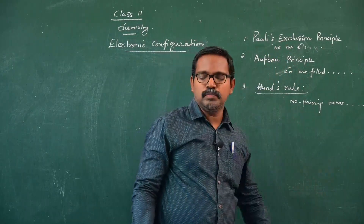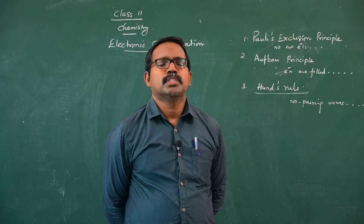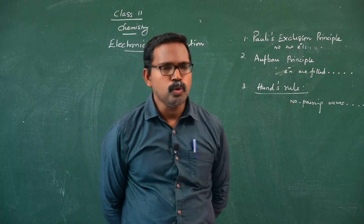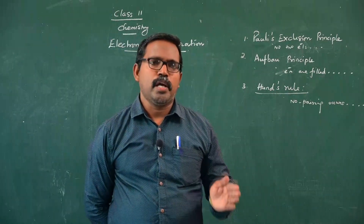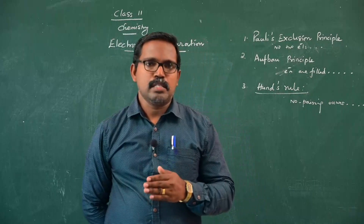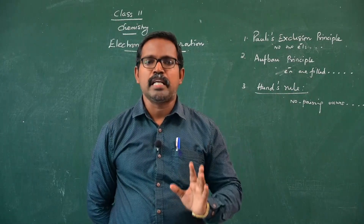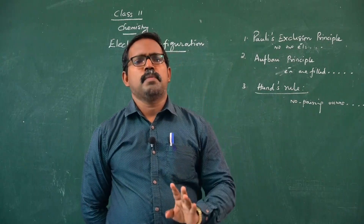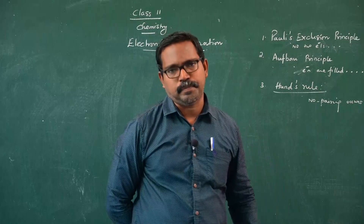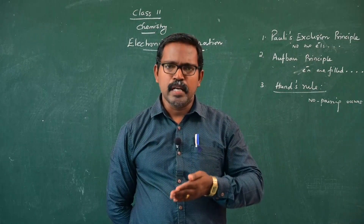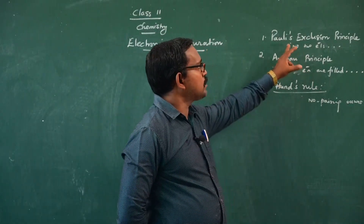Pauli's exclusion principle states that no two electrons in an atom can have all four sets of quantum numbers identical. I will explain in coming classes the four types of quantum numbers. One quantum number I already mentioned is the principal quantum number n. The four quantum numbers are: principal quantum number, azimuthal quantum number, magnetic quantum number, and spin quantum number. These four quantum numbers have different values for each electron present in an atom.